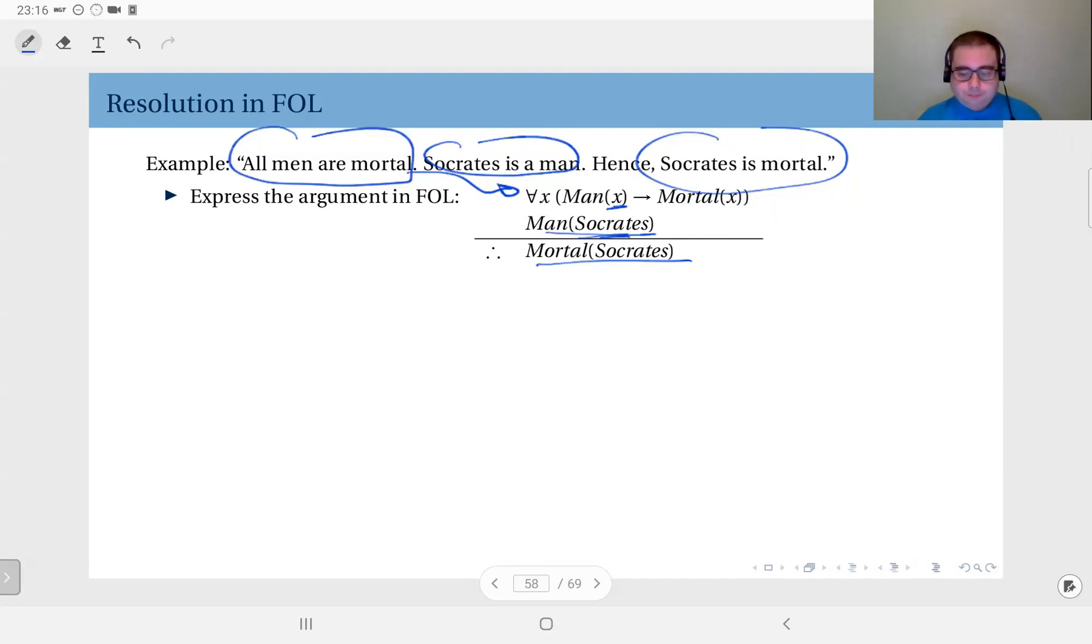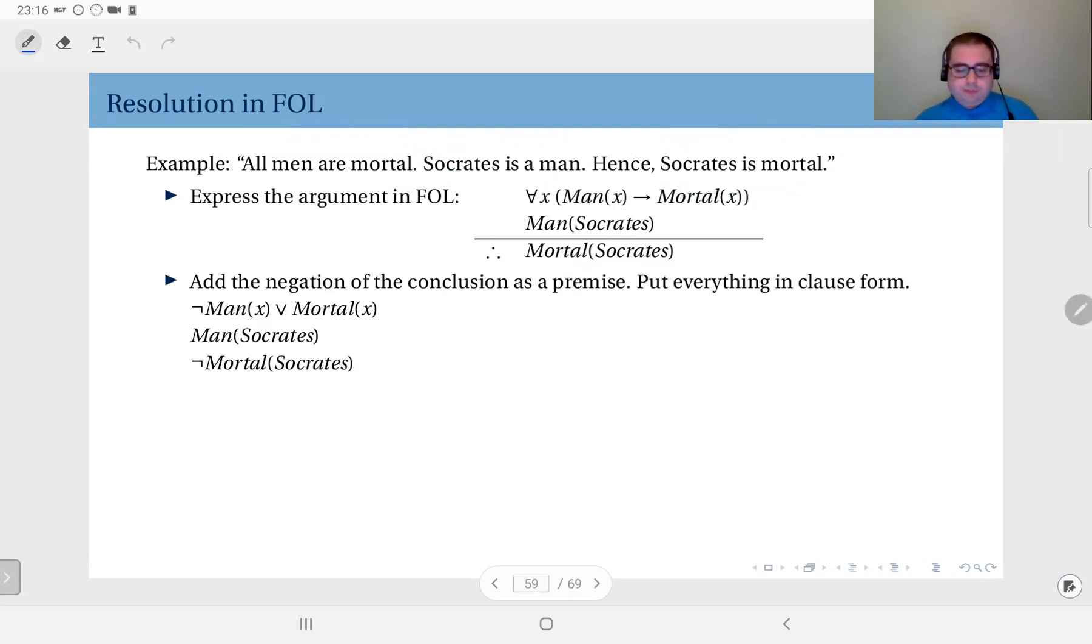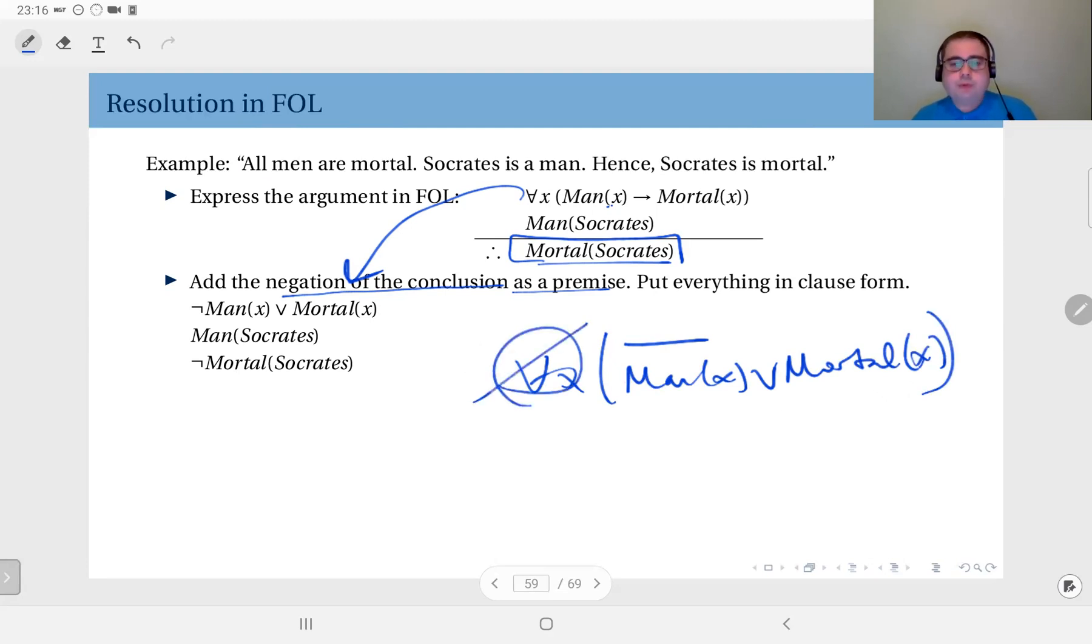that this argument is valid. First of all, I'm going to put this in prenex normal form and then clause form. Also, I'm going to add the negation of the conclusion as a premise. If you remember, we did the same thing with propositional logic. So I'm going to add the negation of Mortal(Socrates) into the set of premises. I have also eliminated the quantifiers here. You can express this as: for all x, ¬Man(x) ∨ Mortal(x). Since there are no existential quantifiers here, I'm just going to drop the universal quantifier. This one is already a literal, and this negated is already also a literal. So we apply the resolution principle here.